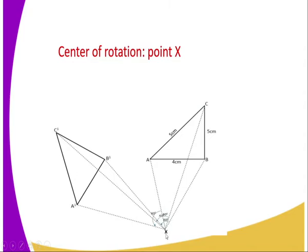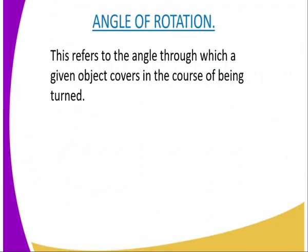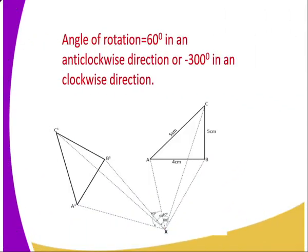What about the angle of rotation? The angle of rotation refers to the angle through which an object covers in the course of being turned. The angle which is covered during rotation is what we refer to as the angle of rotation. For instance, if we have triangle ABC, the angle covered by B as it moves from B to B' is referred to as the angle of rotation.